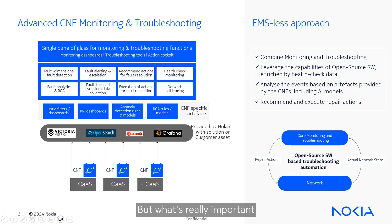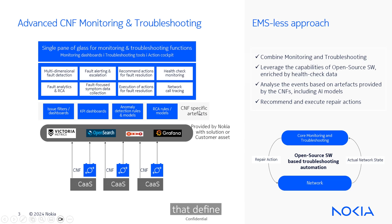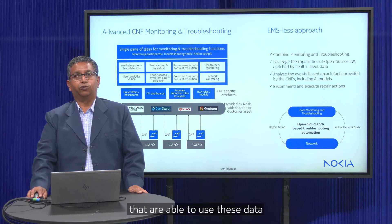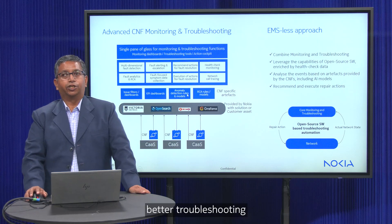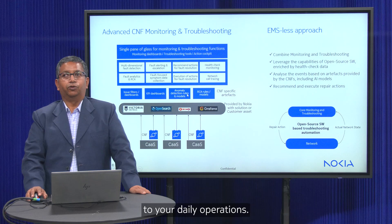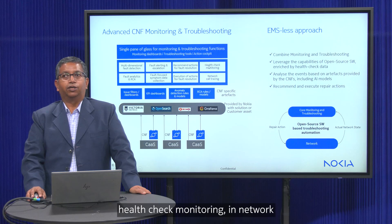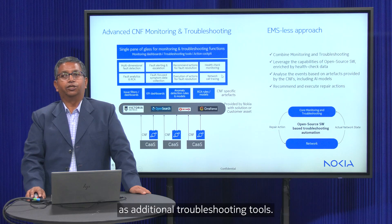What's really important is that we provide, along with our network function artifacts, the dashboards that bring life to these open source assets, along with rules and AI/ML models that use the collected data to bring better troubleshooting and automation to daily operations. Besides the usual observability dataset of alarms and counters, we are doing log monitoring, health check monitoring, and network-based call tracing as additional troubleshooting tools.